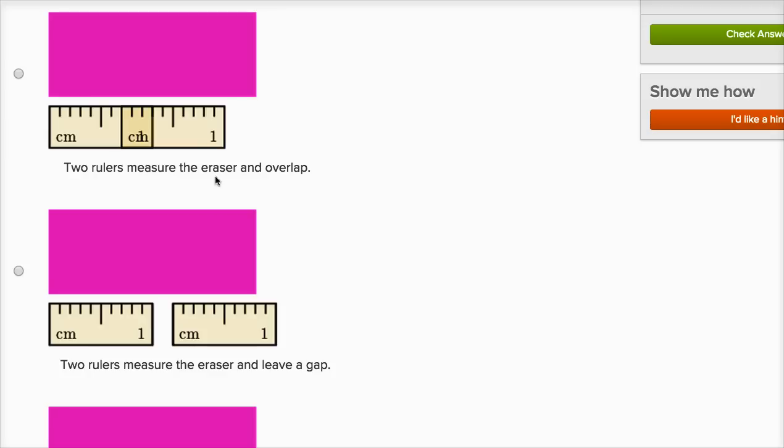And they say two rulers measure the eraser and overlap. Oh, I see. This is kind of, the ruler's a little bit transparent, so this one is overlapping with the one underneath. So you definitely don't want to do that. You want to put them right next to each other without a gap, and you want to get all the way to the edge of this rectangle.